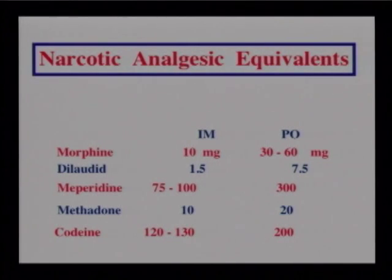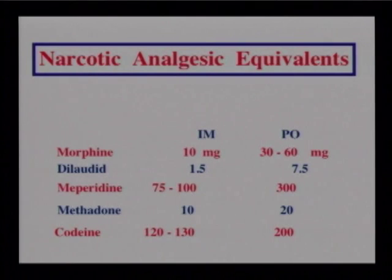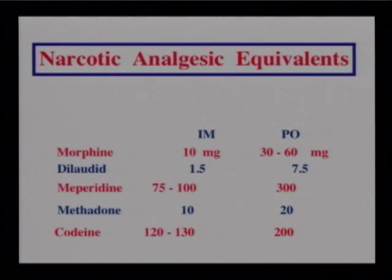Looking at narcotic analgesic equivalents, dosages vary widely — Dilaudid's therapeutic IM dose of about 1.5 mg equals the effectiveness of 75 to 100 mg of Demerol (meperidine). The lesson: never substitute one narcotic for another dose for dose. Also note that oral medications require a much higher dosage to achieve the same therapeutic effect as lower doses given IM or IV.